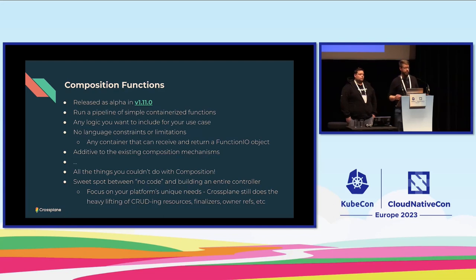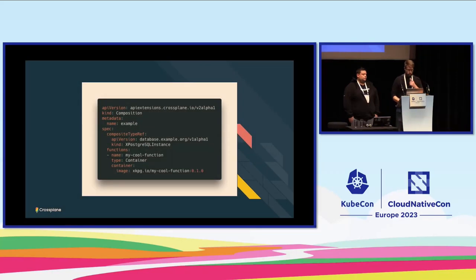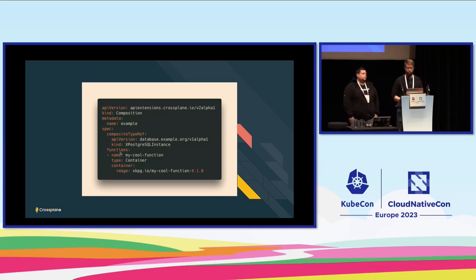We're trying to find the sweet spot between fully declarative no-code platform building and rolling an entire custom Kubernetes controller with reconciliation logic. With composition functions, you can still define static composed resources and patching/transforming logic, but now you can also specify a pipeline of functions to execute over those resources. For instance, a function section can call 'my-cool-function,' which will manipulate the resources at runtime and give them back to Crossplane to act on.